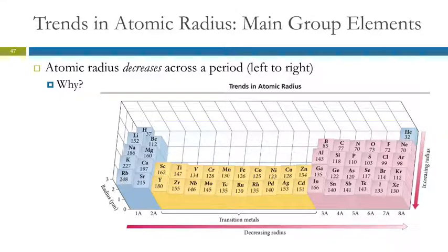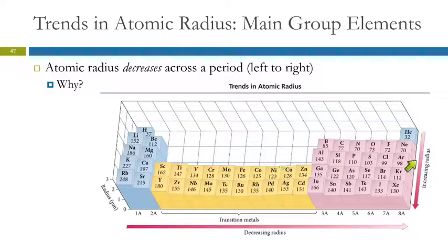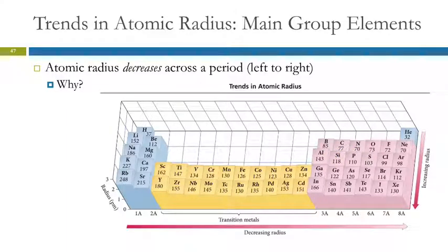What doesn't make intuitive sense is that as we go across a period in the periodic table, they get smaller. You would think they'd get larger for the same reason — it's got more protons, more electrons, it should be larger. But as we're going across, let's look at boron through neon: boron has its valence electrons in the second principal level, ending with 2p1, then 2p2, 2p3, 2p4, et cetera. So we're adding electrons into the same principal energy level.